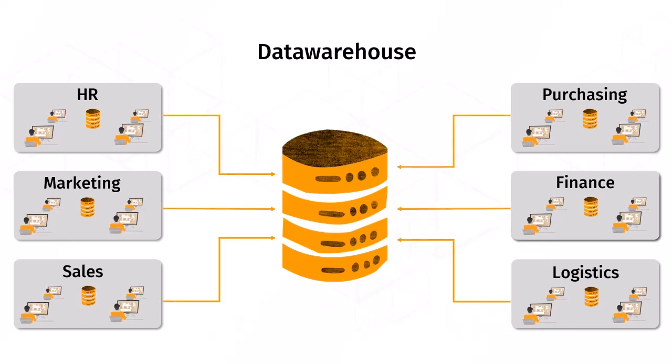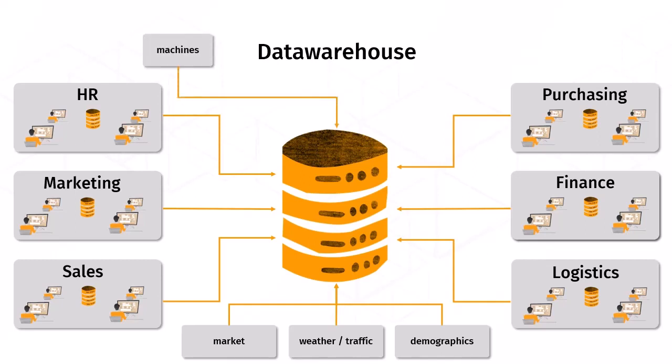External data can also be added, such as market information, information about weather or traffic, and for example, demographic data. Information generated by machines, for example in a production process, can also be added to the data warehouse, just like manual imports of important data.